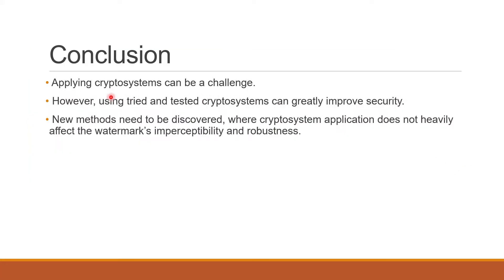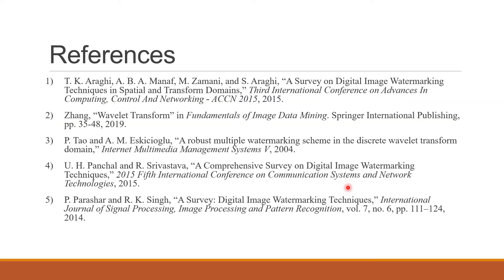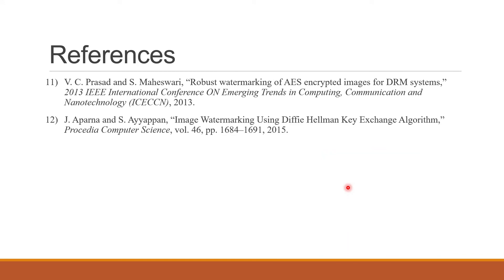In conclusion, applying cryptosystems can be a challenge because of the way that images are represented digitally. First, images may be very large data, and secondly, each pixel has a range value where it cannot go beyond. However, if we can somehow incorporate these cryptosystems into the algorithms, we can greatly improve the security of the algorithm. Therefore, new methods need to be discovered where the cryptosystem application will not negatively impact the imperceptibility and robustness of the watermark. Thank you very much for your time. Please leave any feedback or comments in the comment section.